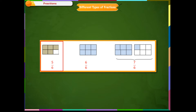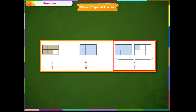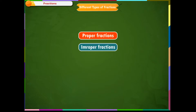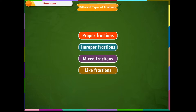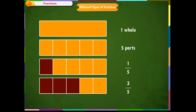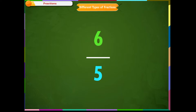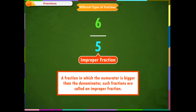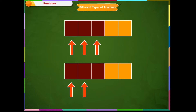Fractions such as five by six represent part of a whole, six by six represents a whole, and seven by six represents more than a whole. Let us do a review of the different types of fractions. The different types are proper fractions, improper fractions, mixed fractions, like fractions, and unlike fractions. Fractions where the numerator is smaller than the denominator are called proper fractions. Now, look at the fraction six by five — this is not a proper fraction. A fraction in which the numerator is greater than the denominator is called an improper fraction.